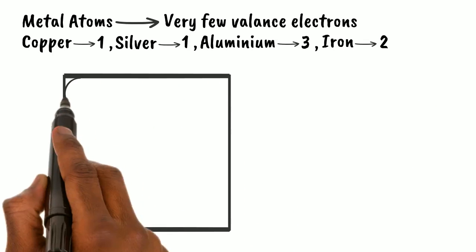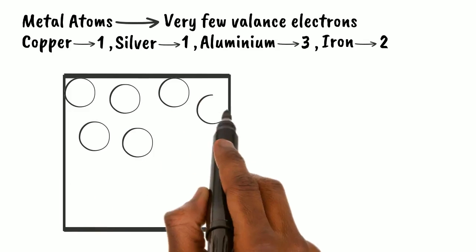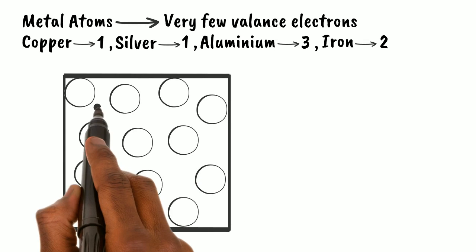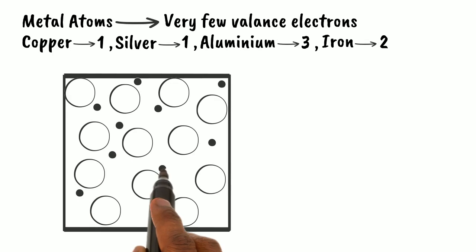The valence electrons in the metal are attached to the atoms loosely. These valence electrons can easily be released from parent atom to join a common pool. The remaining part of the atom becomes positive ion.